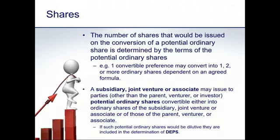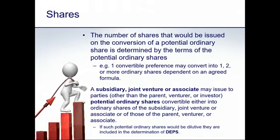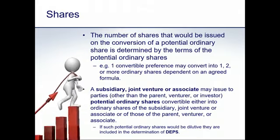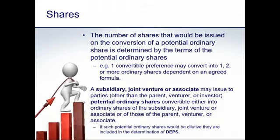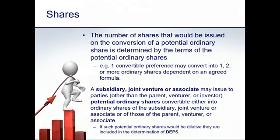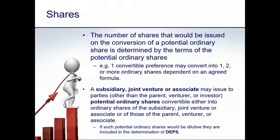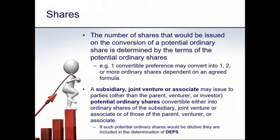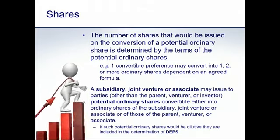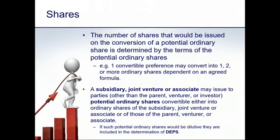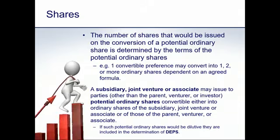When determining the dilutive effect, also consider how many ordinary shares would be issued if a potential ordinary share were converted. A convertible pref might be convertible into one ordinary share on a one-for-one basis, or one-for-two, or one-for-ten. You must be conscious of the conversion ratio because it changes the relationship between the amount added back to earnings and the number of ordinary shares added to the denominator. Instruments converting on a one-to-one basis will generally be less dilutive than those converting on a one-to-many basis.